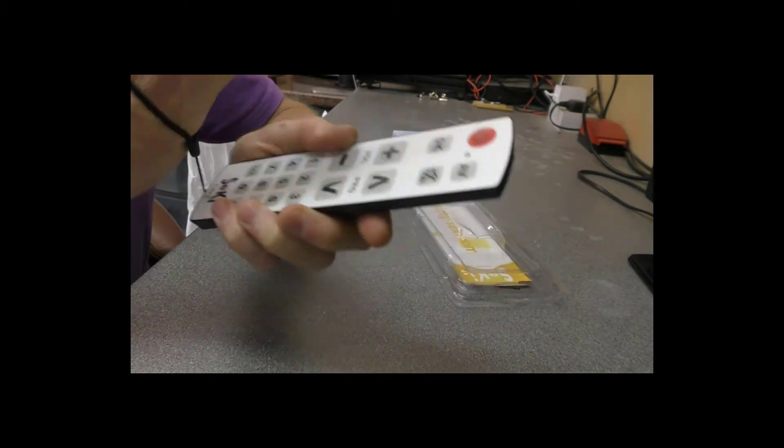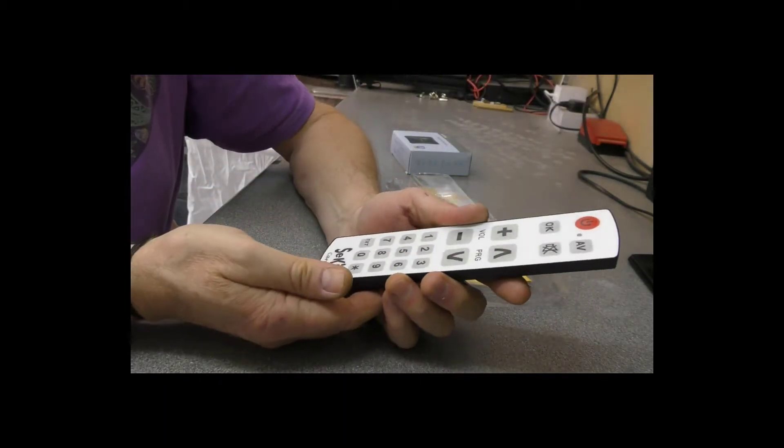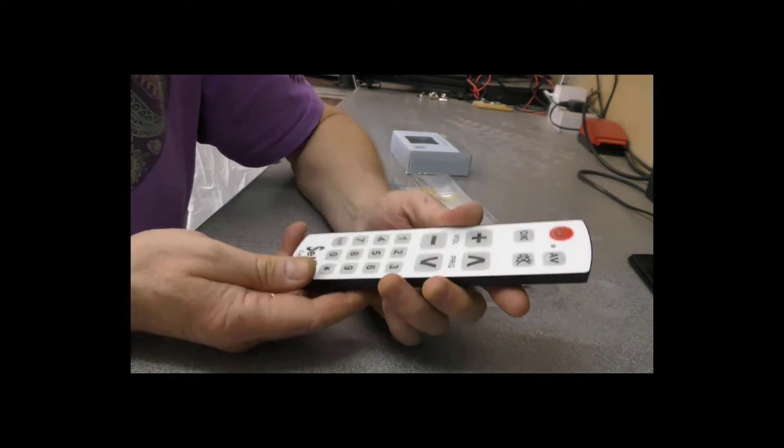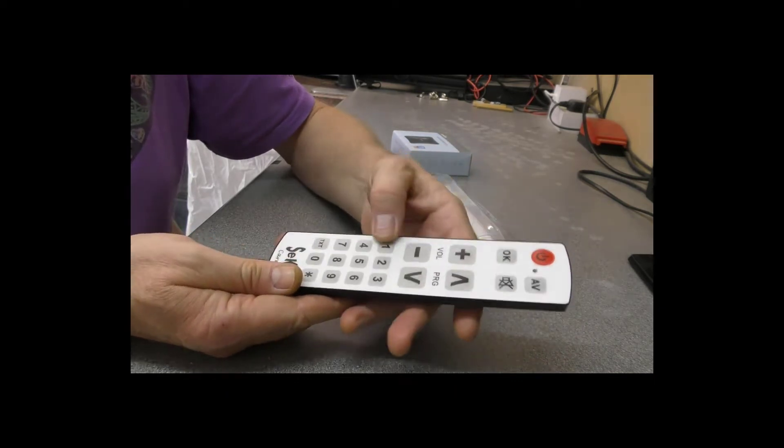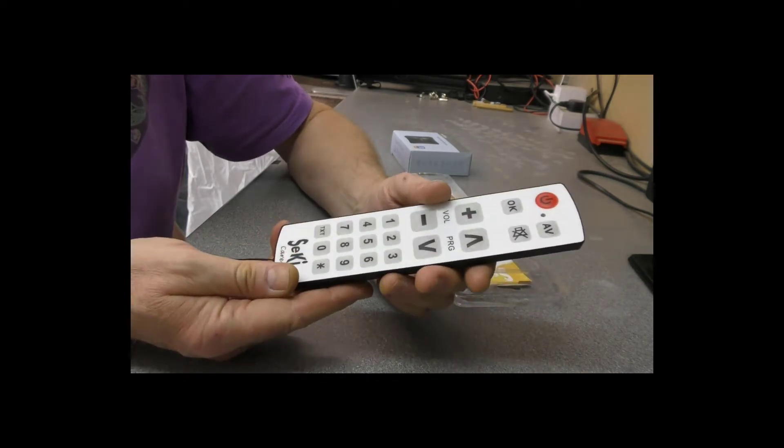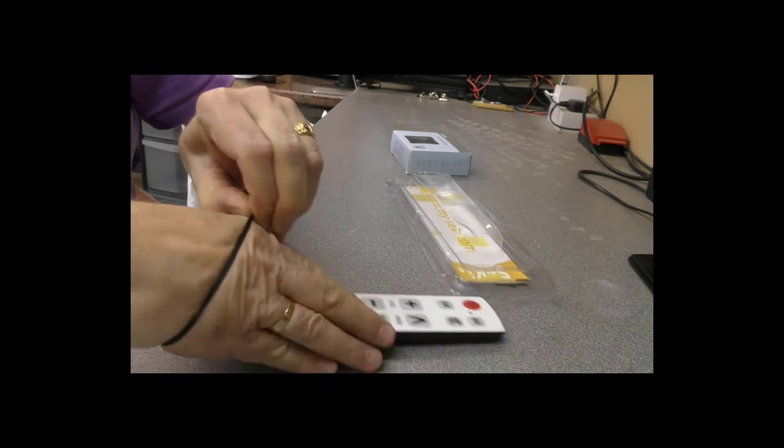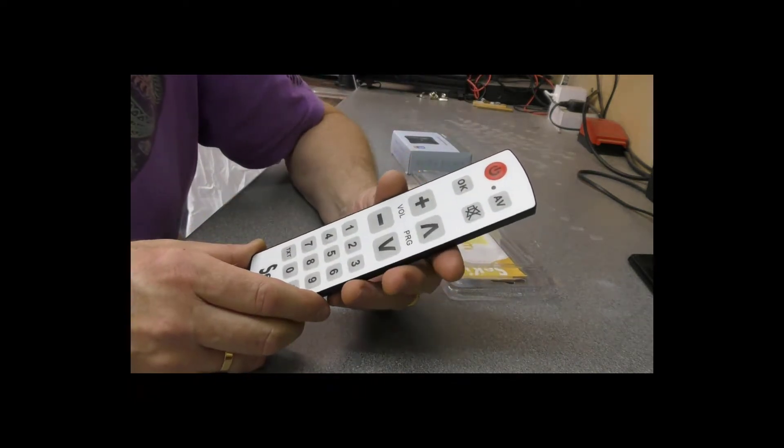There is a little wrist strap which I can just get over my hand if you should desire such a thing. We've simply got on and off and volume. She's used to entering a channel number rather than going up and down channels, so we're hoping that will be an ideal replacement for the somewhat confusing Samsung remote that she's got at the moment.